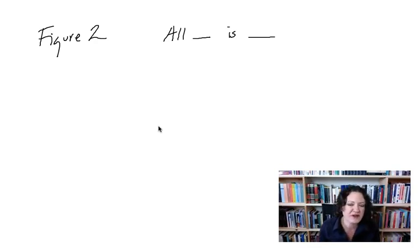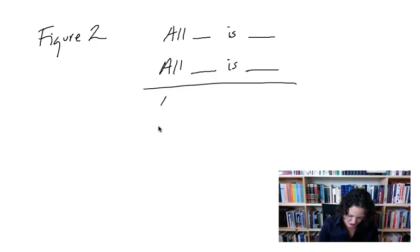What does figure two look like? So, figure two, we'll do the same thing. We'll say all blank is blank. I'm just putting in my quantifier. It could be any quantifier. All blank is blank. Therefore, all S is P. Figure two is where the middle term is aligned up and down.